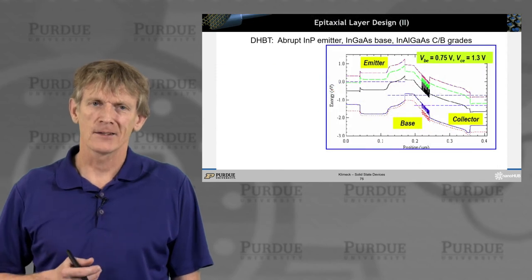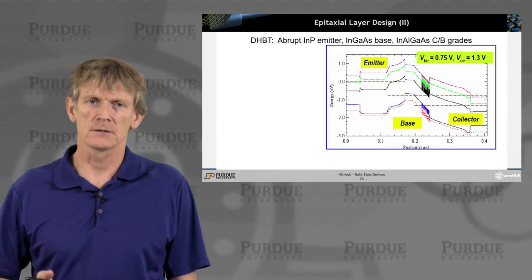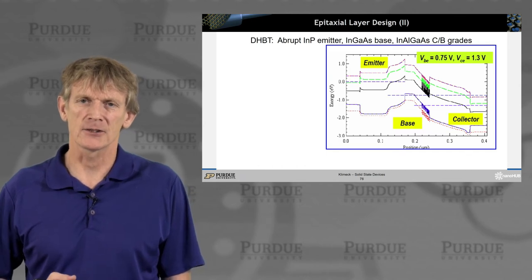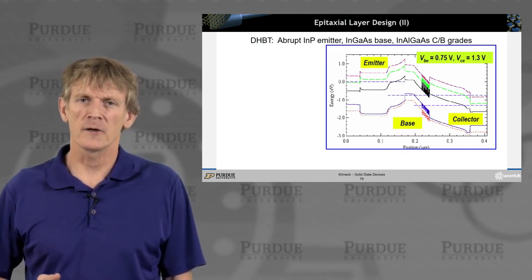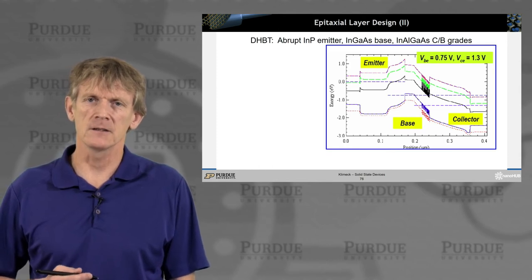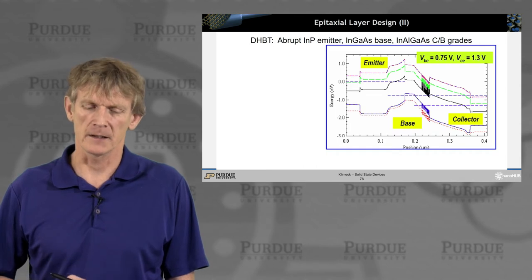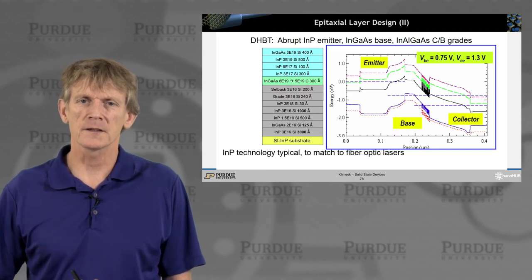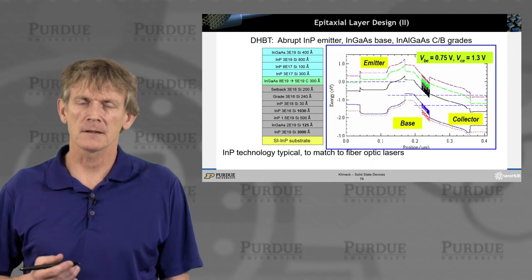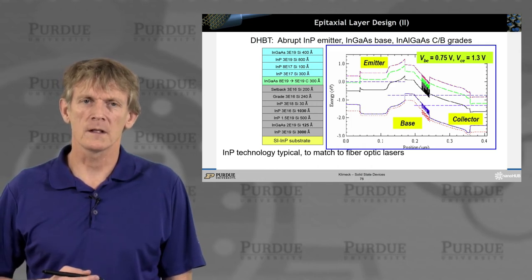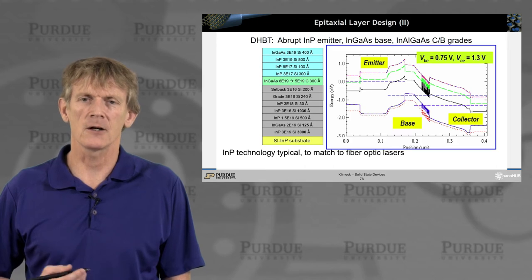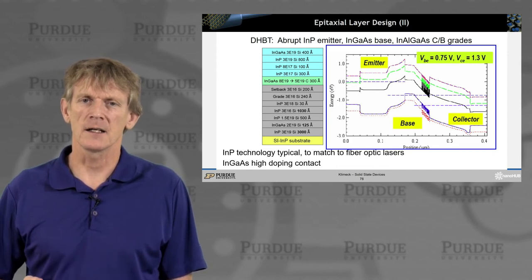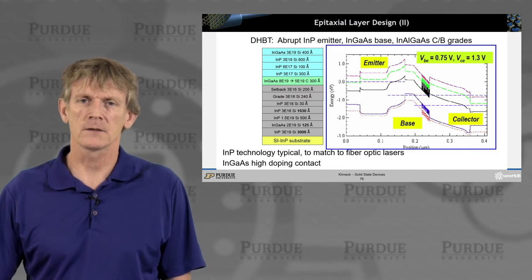Now, compare those concepts to what people research today, and this is actually reasonably old. Look at this fantastic complicated structure. It has an indium phosphide emitter. It has an InGaAs base and an indium aluminum gallium arsenide collector and base grading. The layer structure is just fascinating. It's an indium phosphide technology such that you can have an amplifier like this directly with the optical modulators that couple the signal in and out of optical fibers. And you can do that in the single technology. Indium gallium arsenide has a high doping contact. That's quite typical in these class of devices.